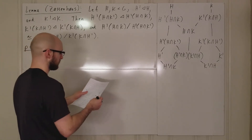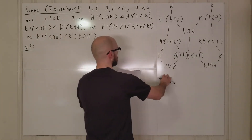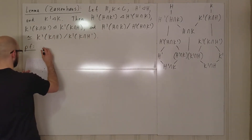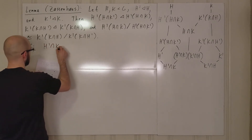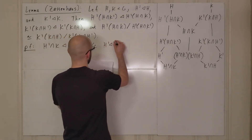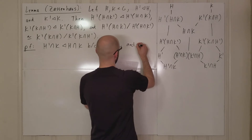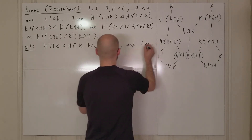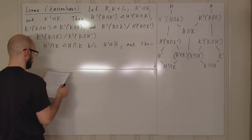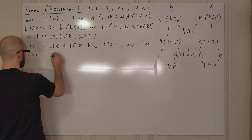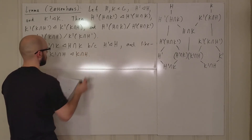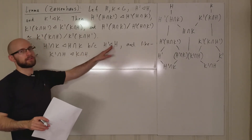Okay, so first thing: we want to show this is normal in here, and this is normal in here. H prime intersect k is normal in h intersect k, because h prime is normal in h. Likewise, k prime intersect h is normal in k intersect h.